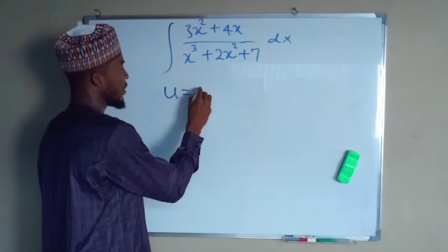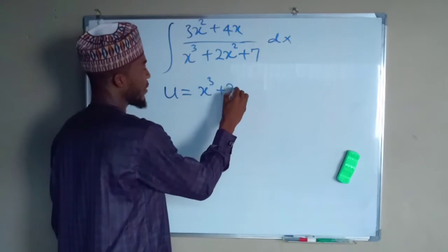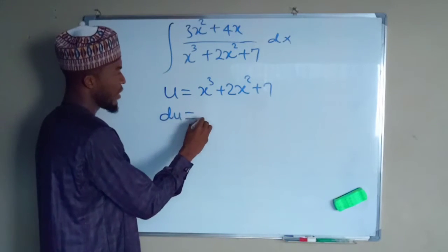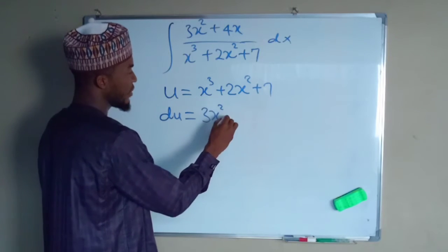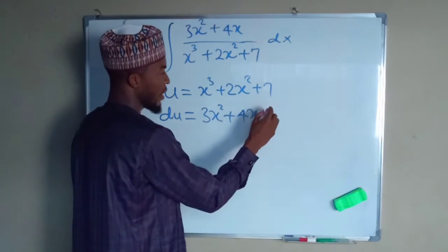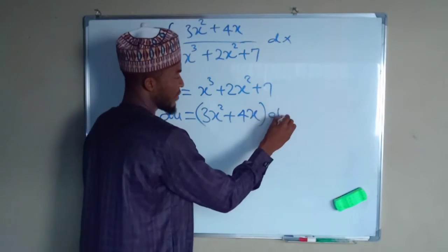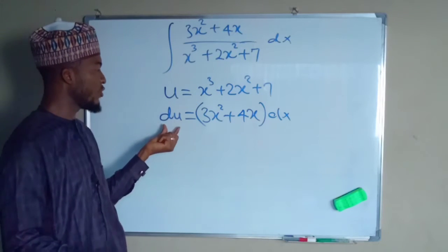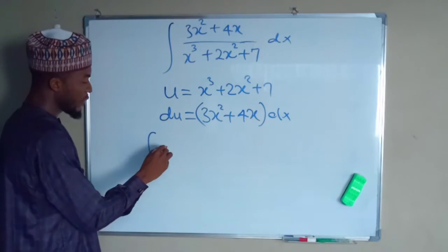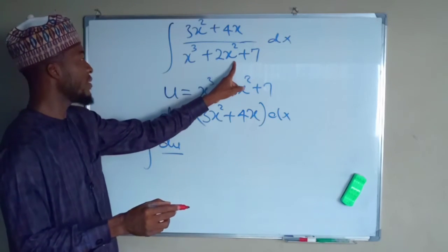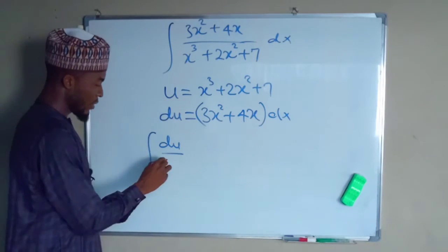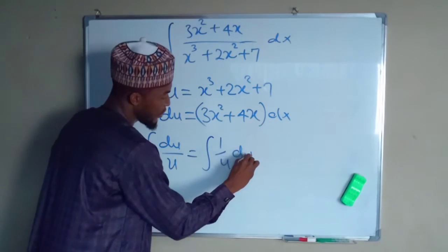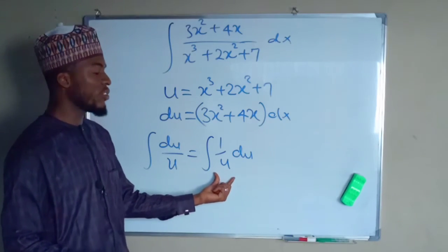Now let us look at another example. Suppose we are asked to integrate with u equal to x cubed plus 2x squared plus 7. The derivative of u with respect to x: the first term gives 3x squared, the second term gives 4x, and the constant is 0. So du equals 3x squared plus 4x dx, which we already have as our numerator. We can set this equal to du, giving us the integral of du over u, which equals the integral of 1 over u du. We have already seen that this is just the natural log of u.